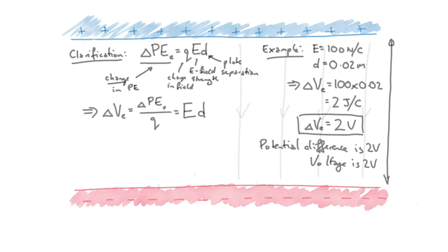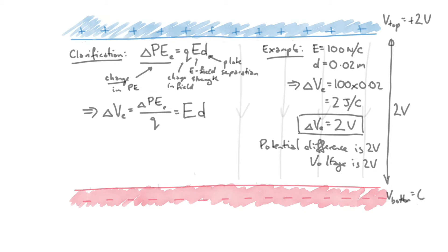The voltage is defined as potential difference. Now a key point: these two plates have a potential difference of 2 volts, but the actual potential at each point could be different things. For example, the top could be +1 V and the bottom −1 V, giving a difference of 2 V. Or the top could be +2 V and the bottom 0 V. Or even 71 V at the top and 69 V at the bottom — all give a potential difference of 2 volts. What's important is the difference, not the absolute values.